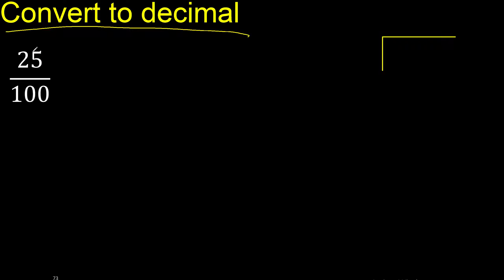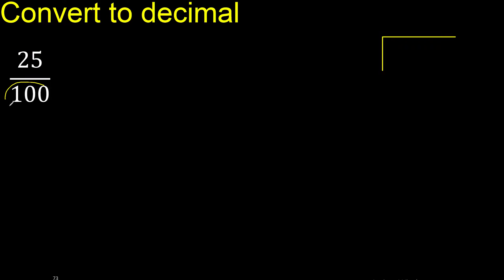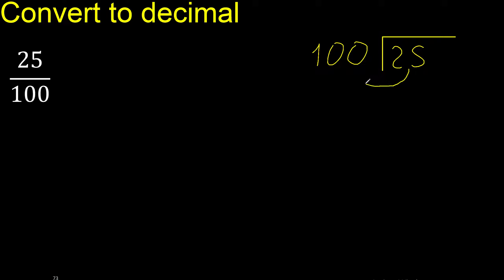25 divided by 100. 25 is less than 100, therefore complete — always complete with 0 here.